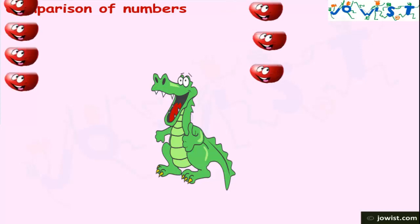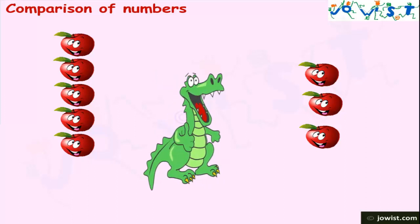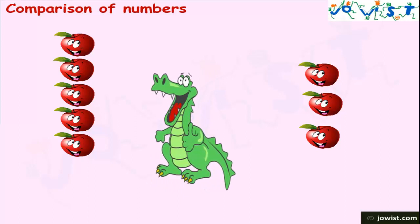One day, it found apples on its both sides. One side had five apples and the other side had three apples. As the dragon was gluttoned, it always went towards that side which has more apples. Here, it went towards five apples and ate them.